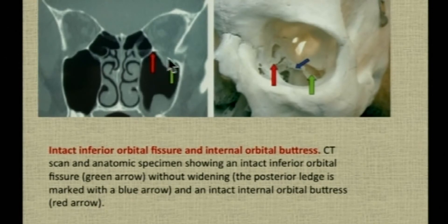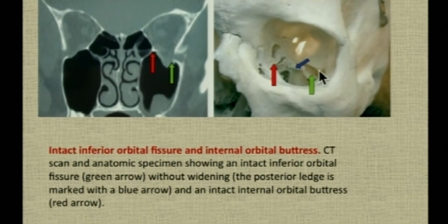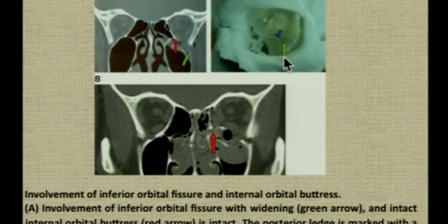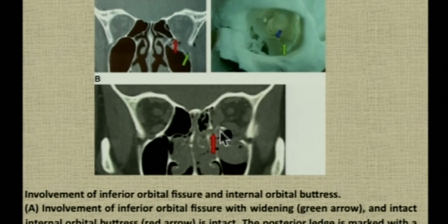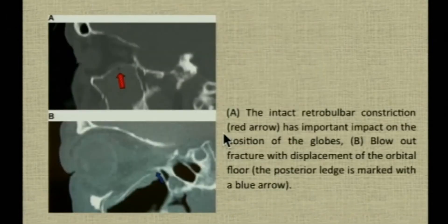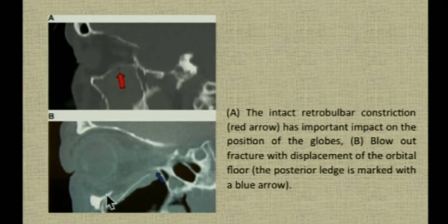In clinical examples: a left orbital floor fracture with intact buttress and intact inferior orbital fissure requires the implant placed over the fracture without needing to cover the fissure. In a large orbital floor fracture involving the inferior orbital fissure, the fissure must be obliterated with the implant to prevent residual enophthalmos, and the implant can rest on the intact posterior ledge and buttress. When the buttress is also displaced, it can no longer be used as a landmark. In the sagittal section, the S-shaped contour of the floor is critical for normal globe position — the implant is placed from the fracture site to the posterior ledge to recreate this S-shaped contour.